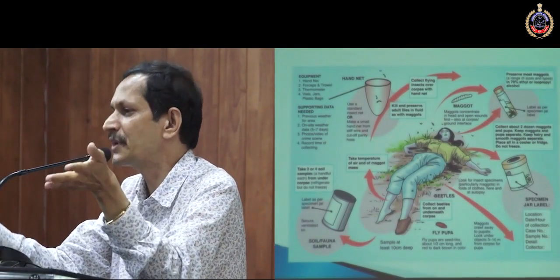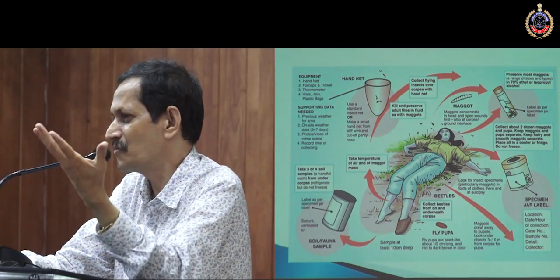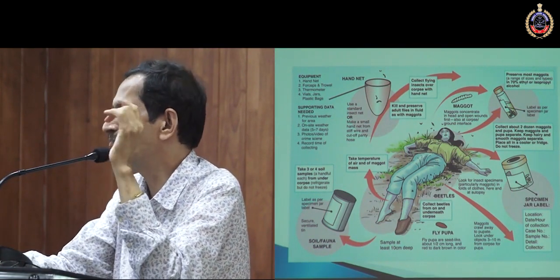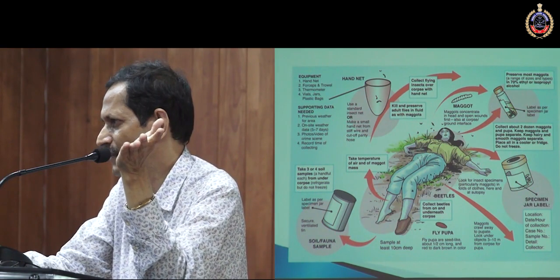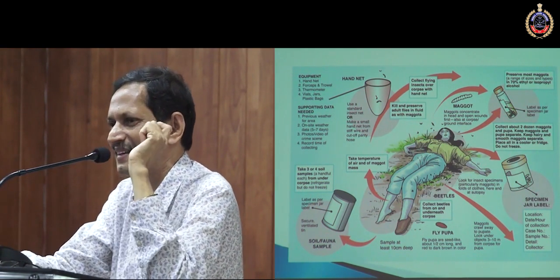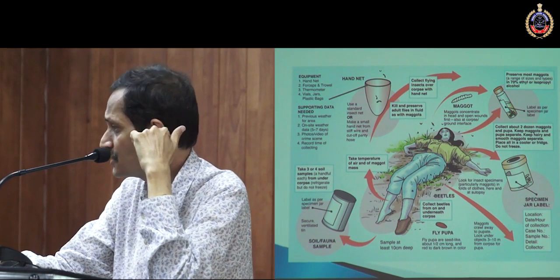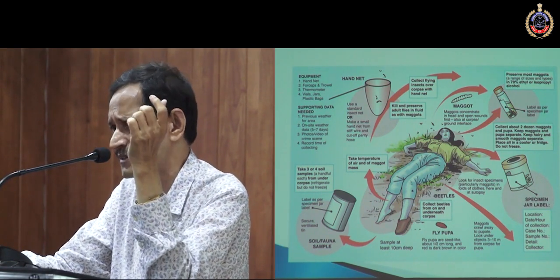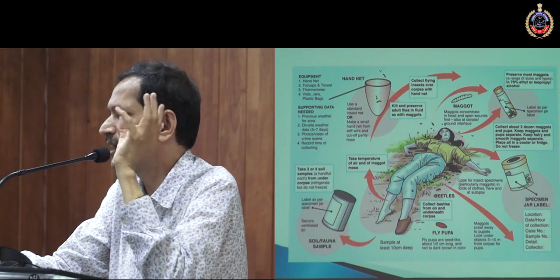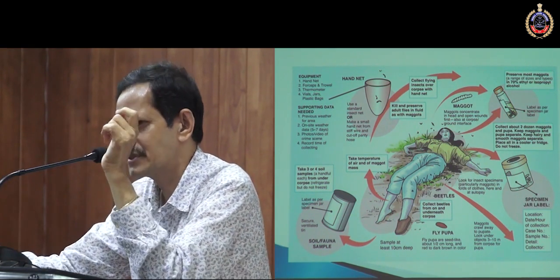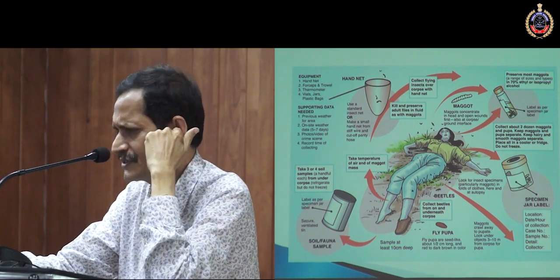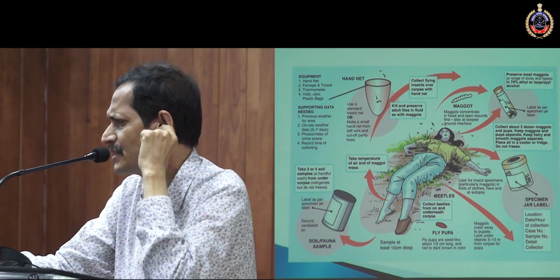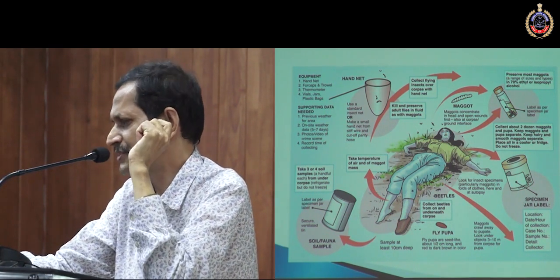You have to collect the temperature of that area — temperature of the specimens as well as atmosphere. If possible, you should collect all weather data from the nearest weather station. The development of larvae and pupae is influenced by climatic conditions, especially temperature, because insects are cold-blooded animals — they don't have any temperature regulatory system. Their body temperature depends on atmospheric temperature. When temperature increases, metabolism increases and development will be very fast.